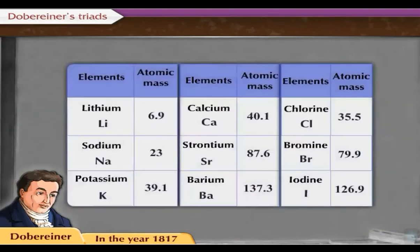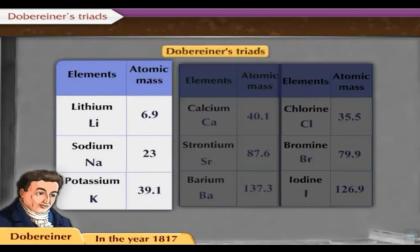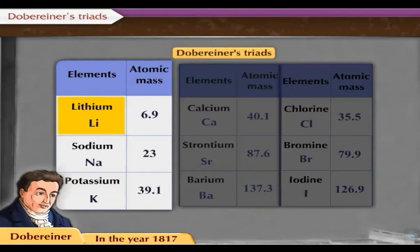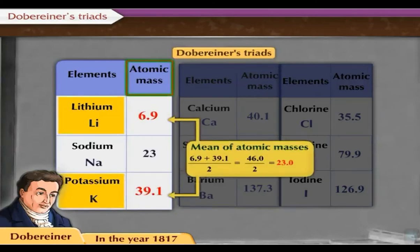Let us now study some examples of Dobereiner's Triads. The elements lithium, sodium, and potassium form a triad. The atomic mass of lithium is 6.9 and that of potassium is 39.1. The mean of their atomic masses is equal to the atomic mass of sodium, which is 23.